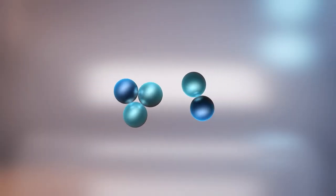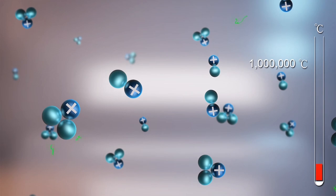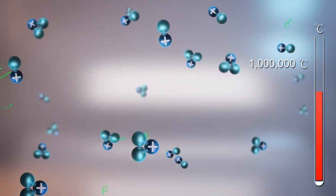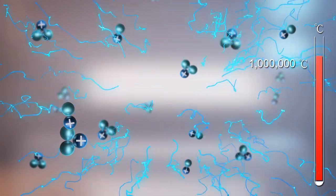To achieve this, hydrogen isotopes are placed inside a tokamak like KSTAR to create a plasma state where ions and electrons are separated, and the ions are then heated and maintained at extreme temperatures.